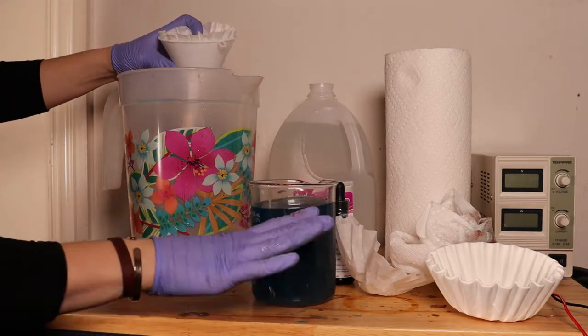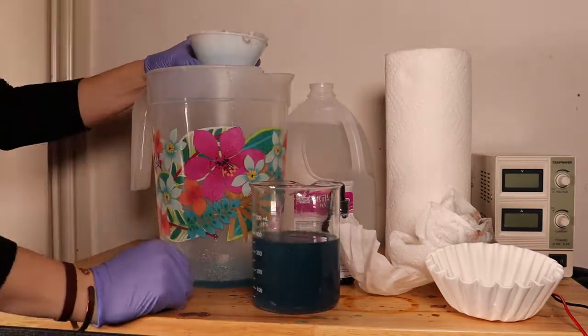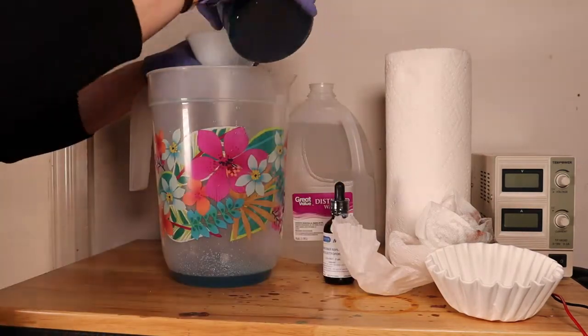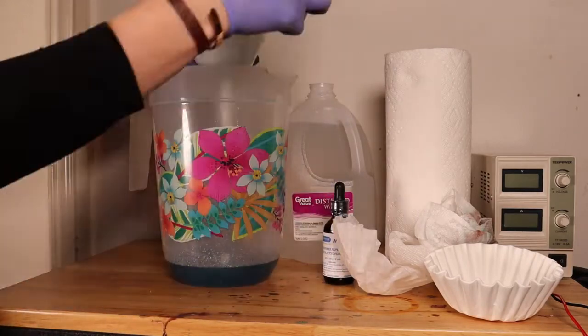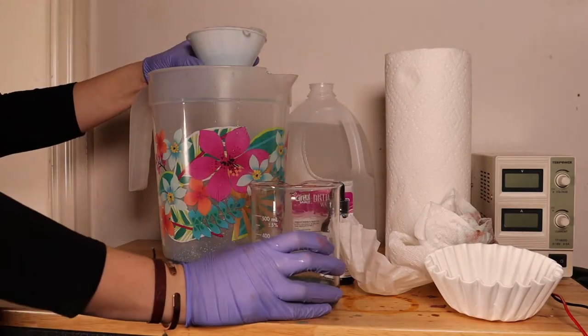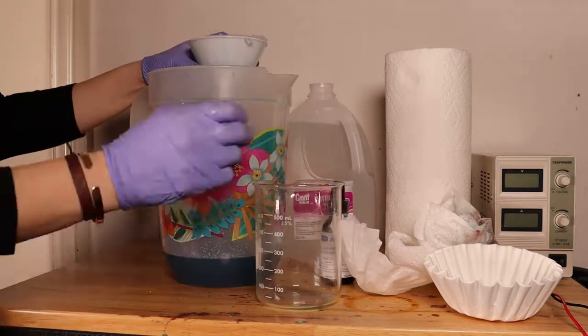Now you're going to repeat this process until you notice that all the copper residue is out of your solution. Depending on how long it's been since you've cleaned your bath, it might take two to four different times of going back between the jug and the beaker until you notice that it's all gone.